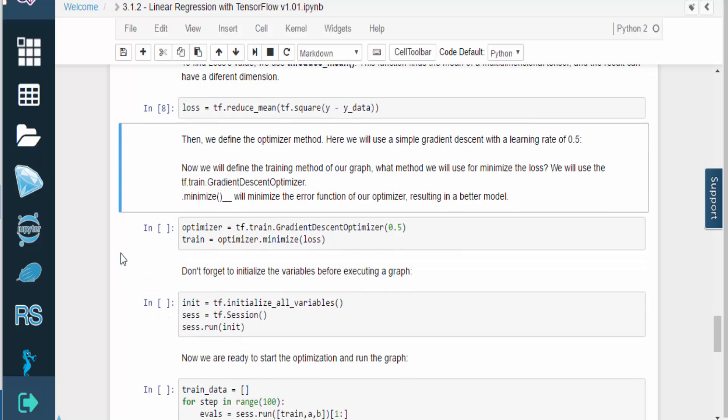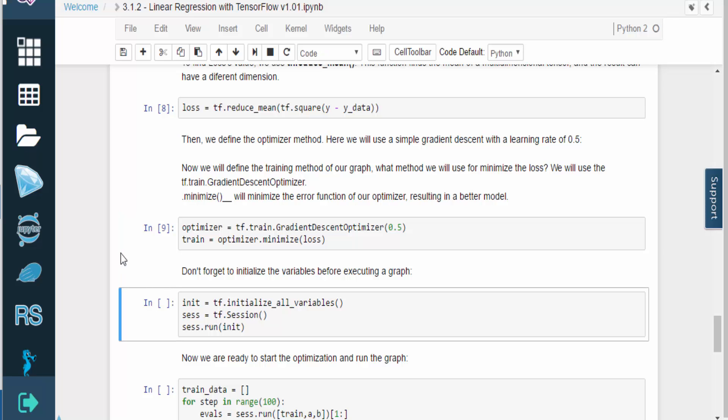We then need to define the optimizer method. For our purposes, we'll use a simple gradient descent with a learning rate of 0.5. The minimize method will calculate the gradients and apply them to our variables. And don't forget to initialize the variables before executing a graph.